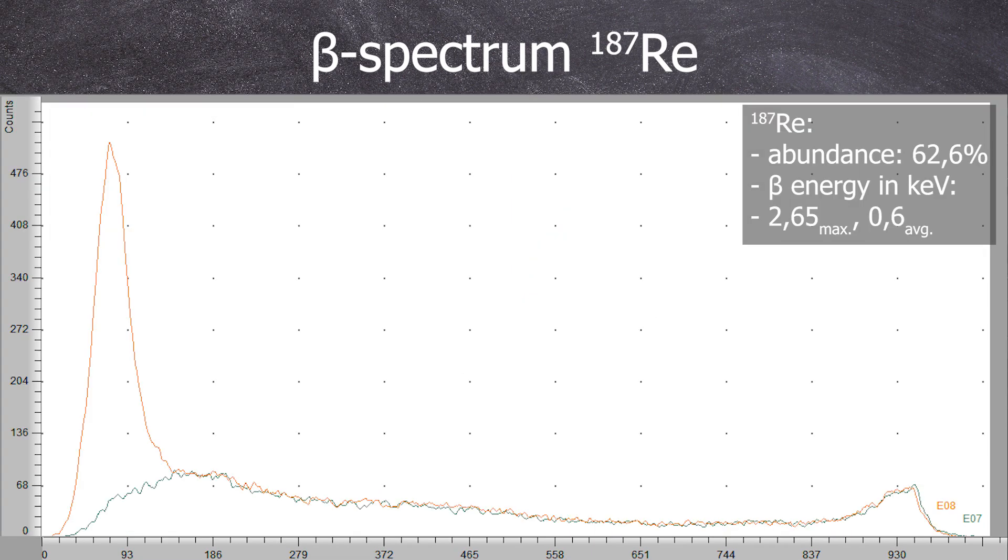Lastly, let's talk about rhenium-187. It's a beta minus emitter decaying with a half-life of 5 times 10 to the power of 10 years into osmium-187. It is an extremely low energy beta emitter with a maximum energy of just 2.65 keV and an average energy of 0.6 keV.